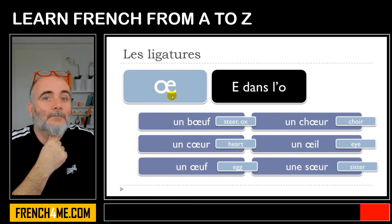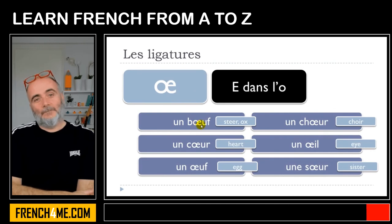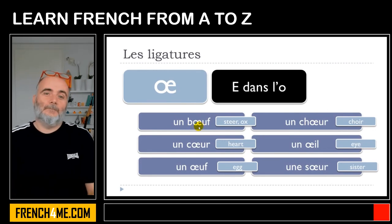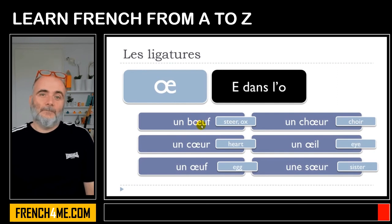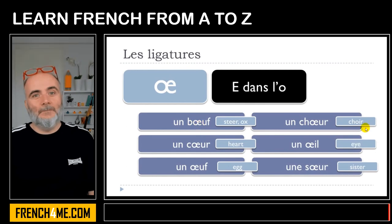It will be exactly the same challenge if you want to write it correctly with your computer — whether you try to find this letter by inserting a symbol, or you just put O and then E. Technically that's a mistake, but if you can't do it another way, then just write O and E.